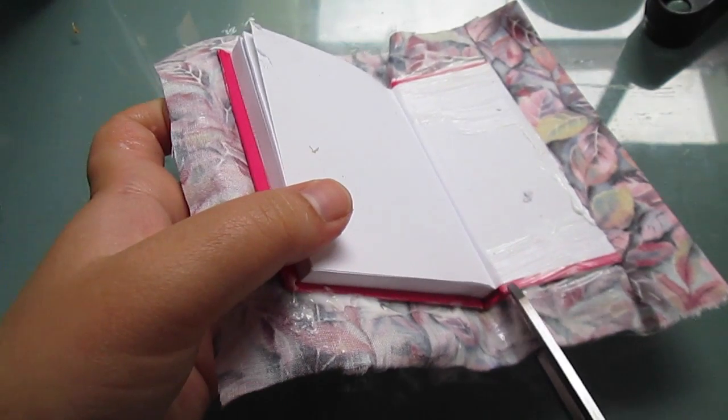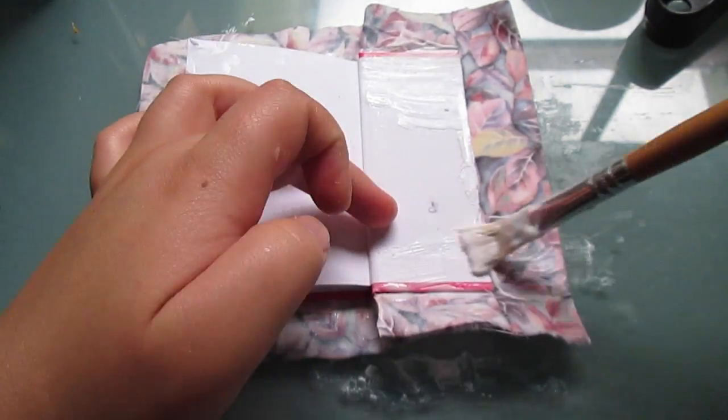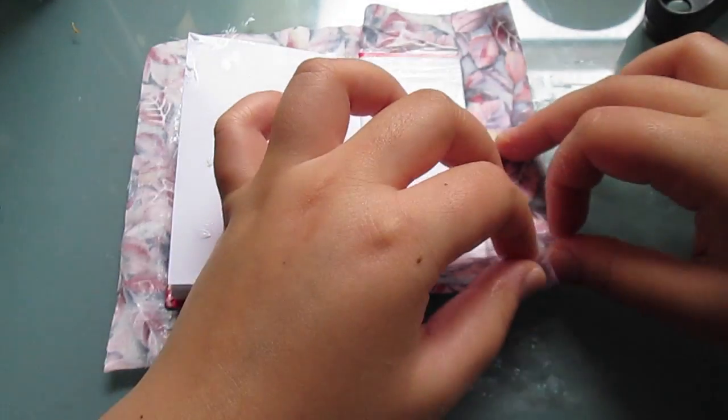As you can see, it's as simple as that. You want to grab your scissors so you can snip the fabric so that it can cover the inside well.